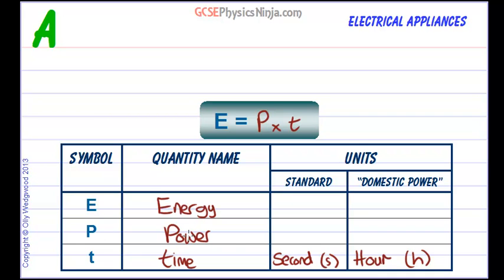P stands for power, and the standard unit of power as you now know is the watt, symbol W. Now in domestic power we don't use the watt because it's too small a unit. We want to use the kilowatt. Kilo stands for a thousand, so this is a thousand watts, and the unit symbol for this is kW, the kilowatt.